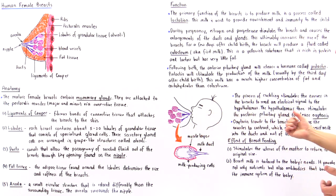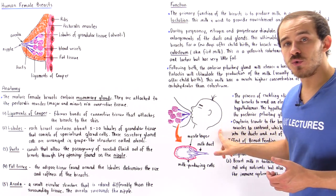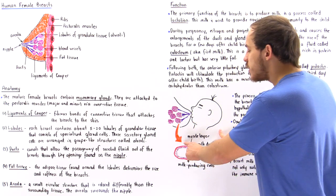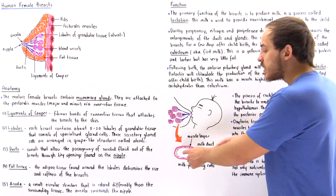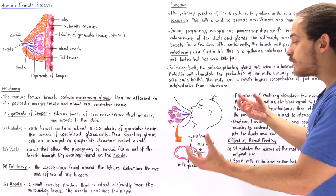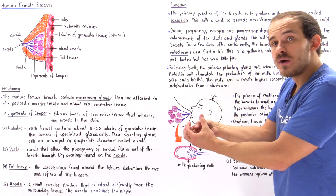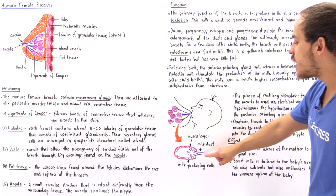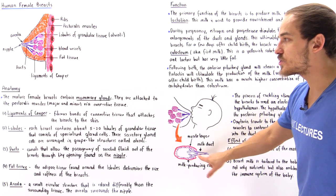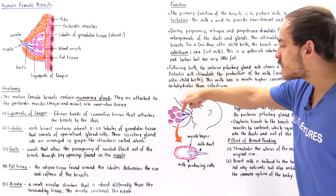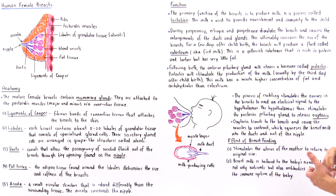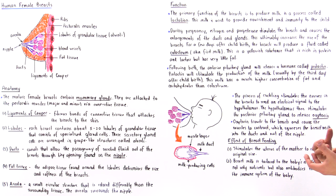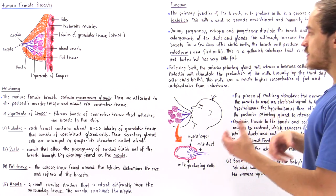When the muscle layer receives the oxytocin, it is stimulated to contract. By contracting, the muscle layer forces and squeezes the milk out of the cells and into the milk ducts. The milk then travels via the ducts through the tiny holes in the nipple and eventually into the mouth of the baby. This is how lactation takes place.